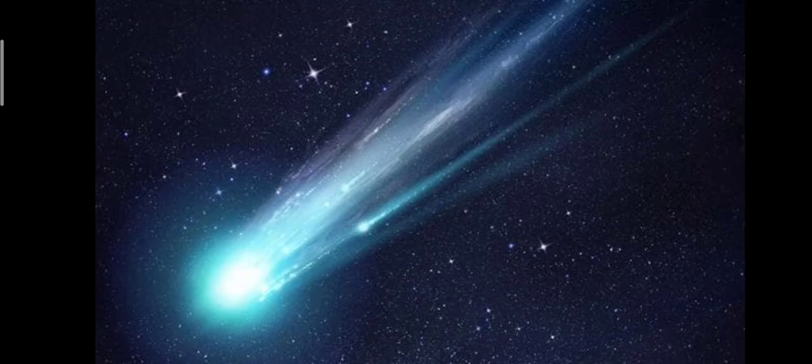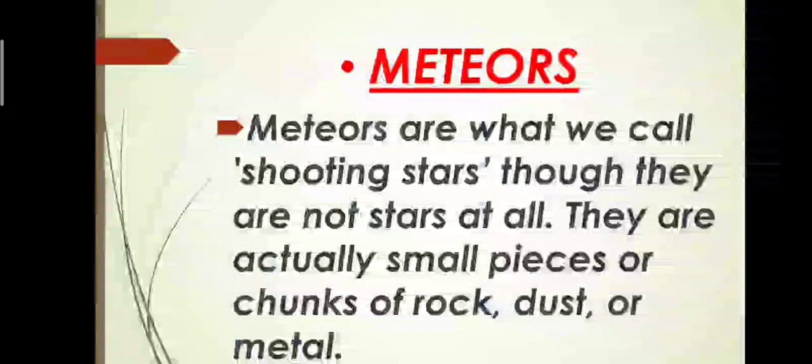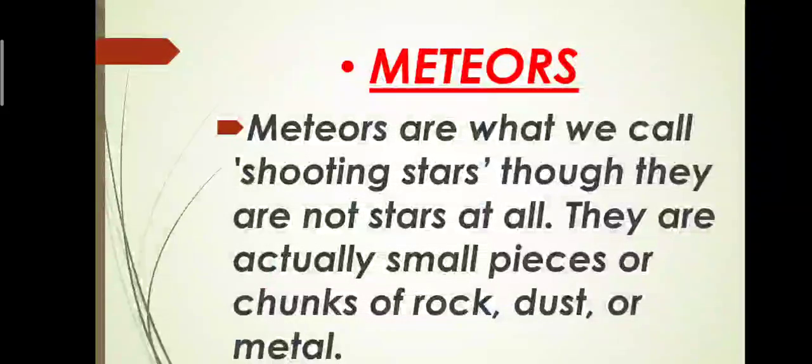Then moving on towards the last celestial body which is meteors and meteorite. The meteors are what we call the shooting stars but they are not stars at all. They are actually the small pieces or chunks of rock, dust, or metal that enter the earth's atmosphere from space at extremely high speeds.